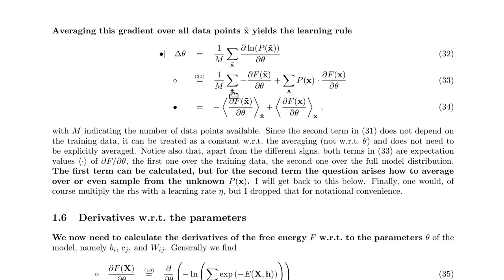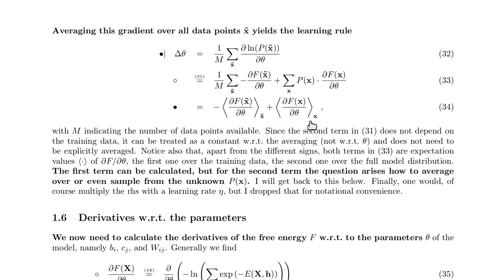On the left side we calculate the empirical mean over the derivative of the free energy with respect to the parameter — that is simply calculating the empirical mean over our data points. While on the right side we calculate the true average over all possible states x, weighted with the probability p(x). Both are averages over the derivative of the free energy with respect to the parameter, but on the left side it's the empirical average over the data, and on the right side it's the average over the model distribution — all possible states weighted by the probability given by the model.